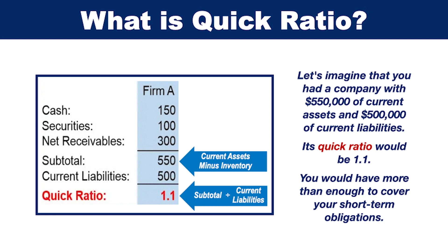Let's imagine that you had a company with $550,000 of current assets and $500,000 of current liabilities. Its quick ratio would be 1.1. You would have more than enough to cover your short-term obligations.